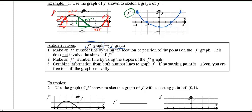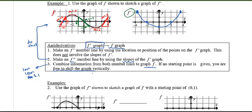We'll use the location or position of the points. Then I want you to make a second derivative number line — and remember, if you're given the first derivative graph, to get the second derivative you need to find the slopes, just like what we did up there. Once we have both number lines we can combine them to graph out f, which is what we did in lesson 5.1. If you're given a starting point we use it; if not, we're free to shift the graph vertically.